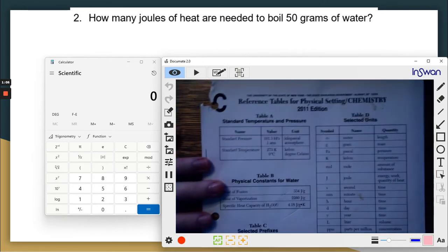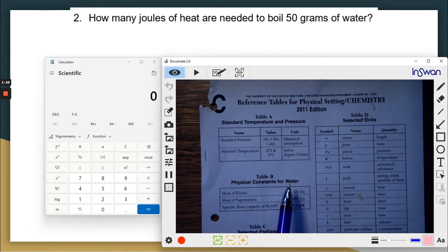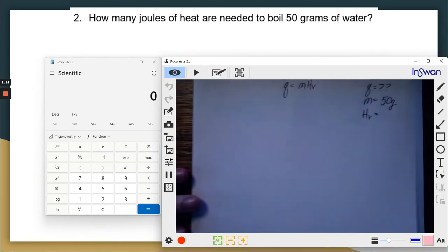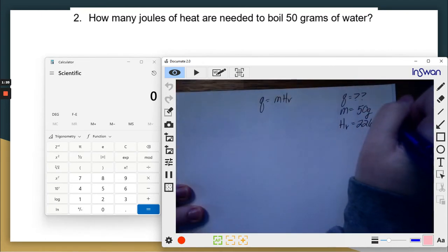Table B. Look at this. Heat of vaporization. It works for water. Do you see the problem says water? So this works. If it wasn't water, they'd have to give it to me. So 2,260 joules per gram. Let's write it up.